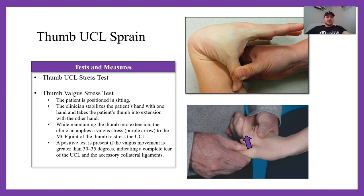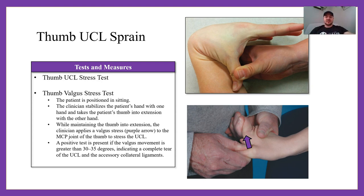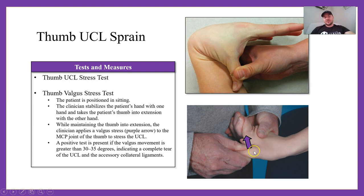For special tests: the thumb UCL stress test and the thumb valgus stress test — similar to the elbow valgus stress test. You stabilize the hand and the distal row of carpals, take the thumb to a slight extension position, and apply a valgus shear force to stress the UCL, looking for pain and laxity.